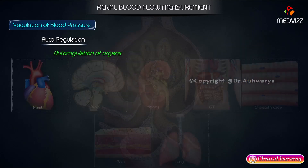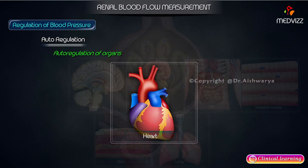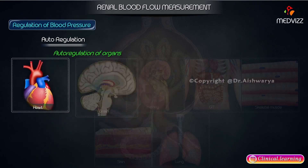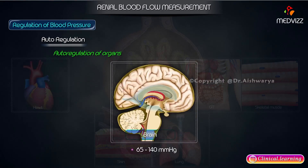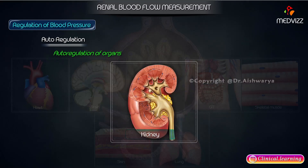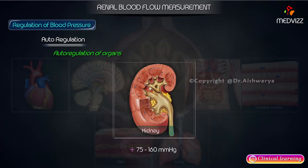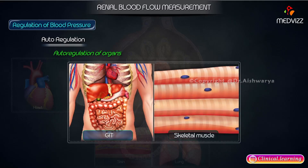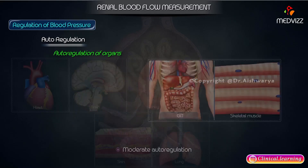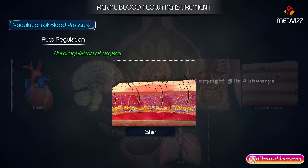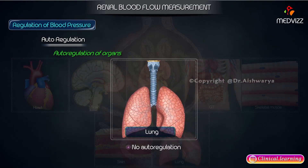Autoregulation by organ: Heart, 60 to 200 mmHg. Brain, 65 to 140 mmHg. Kidney, 75 to 160 mmHg. GIT and skeletal muscle have moderate autoregulation. Skin has very little autoregulation. Lung has no autoregulation.